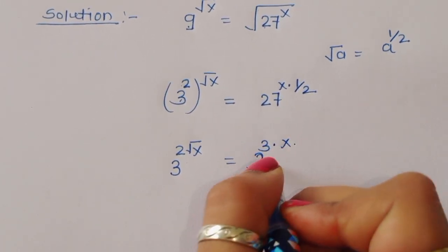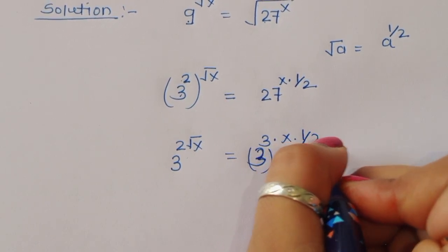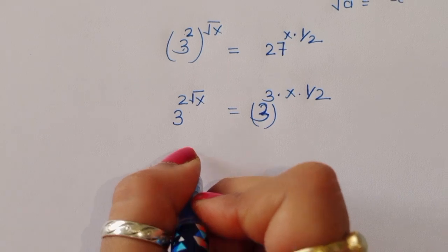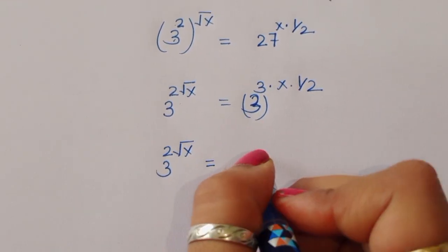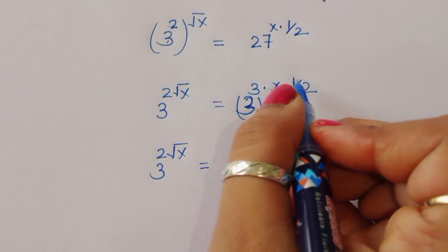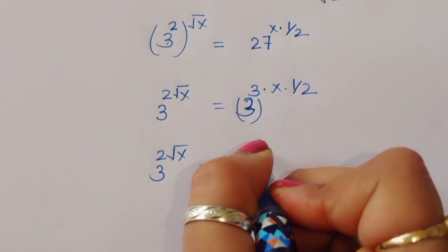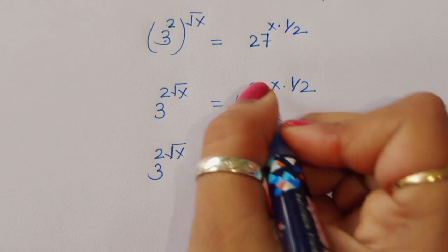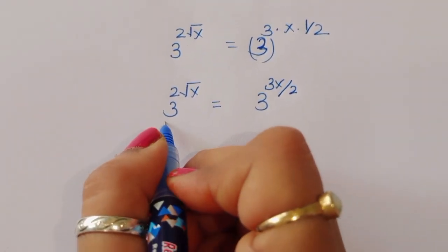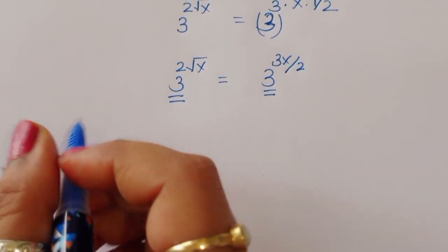So we have 3^(2√x) on the left is equal to 3^(3x/2) on the right. Now you can see the base is the same on both sides, so we can apply the exponent formula.